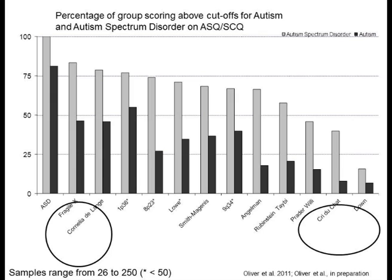One of the things to note here is that although there's this variability in terms of strength of association, in all of these groups the prevalence of these characteristics is much higher than we would expect it to be in the general population. In the general population it's about 1% of individuals who have a diagnosis of autism spectrum disorder. Even in the groups which show the lowest level of prevalence — Down syndrome, for example — it's still around 6%. So it tells us that individuals with genetic syndromes are at higher risk for showing social impairments and autism spectrum disorder characteristics.